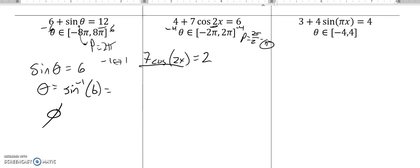So I have 7 cosine times 2x equals 2. Divide both sides by 7. Cosine of 2x is 2 sevenths. So I'm going to inverse cosine that 2 sevenths. Let me do that in my calculator, I get about 1.281.